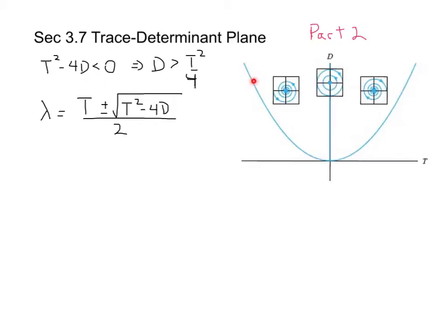The equal-to-zero case puts us exactly on the parabola in the td-plane. This is the curve that says d is equal to t squared over 4. When we're above it — when d is bigger than t squared over 4 — the argument of the square root sign is negative, meaning t squared minus 4d is negative. We can make two other classifications from here.